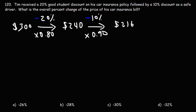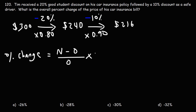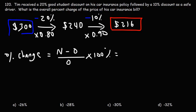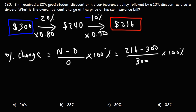Now we can calculate the overall percent change using the formula: new price minus original price, divided by the original price, times 100%. The new price is $216 and the original price we selected is $300. So 216 minus 300, divided by 300, times 100% gives us a change of negative $84 divided by 300, times 100%. The overall percent change is negative 28%.